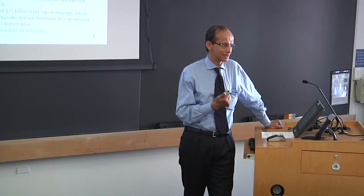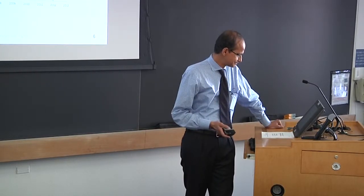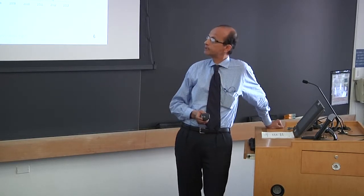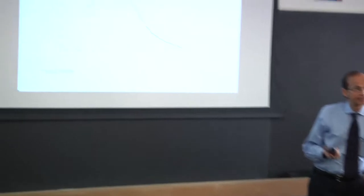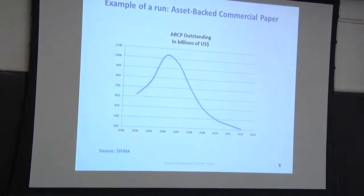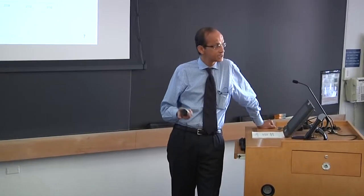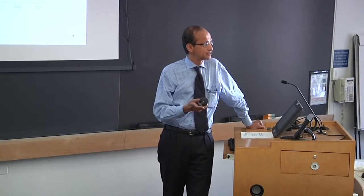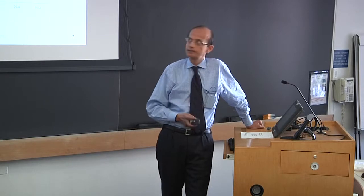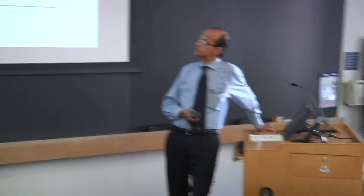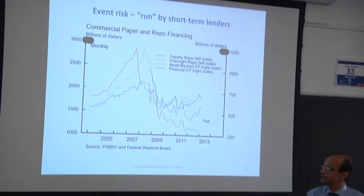Part of the problem was that both Lehman Brothers and Bear Stearns were relying heavily on mortgage collateral, and the crisis was obviously mortgage-related. Asset-backed commercial paper, at its height just prior to the crisis, reached a trillion dollars, and lenders very quickly walked away from that market. Primary dealers' repo financing also fell, but the Federal Reserve stepped in and set up a special facility to provide lending to primary dealers, stabilizing it at a higher level — suggesting that in a crisis, central banks can intervene and provide a backstop.